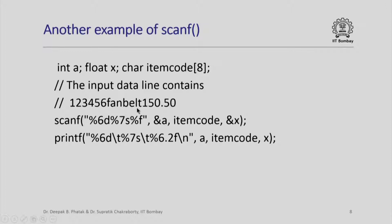However, using scanf I can prescribe a format string which says "%6d %7s %f". It means the first 6 characters are to be converted into an integer number, the next 7 characters are to be converted into a string, and the remaining characters are to be converted into a floating point number. Notice the three variables are written as &a, item_code, and &x. As usual, item_code being the name of the array is itself a pointer, and we are appropriately putting pointer references in scanf so that the values obtained by the function are actually inserted into our variables in the main program.